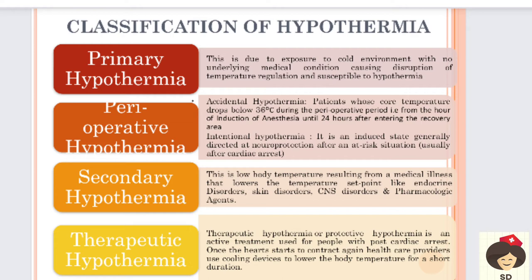Intentional hypothermia is when during surgical procedures, cold infusions or cool fluids are deliberately administered for the patient to protect the neurons. During risky situations like cardiac arrest, we administer cold fluids intentionally, causing the person to go for hypothermia - this is called perioperative intentional hypothermia. So perioperative hypothermia is classified as accidental and intentional.